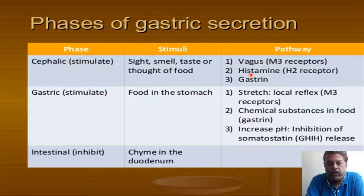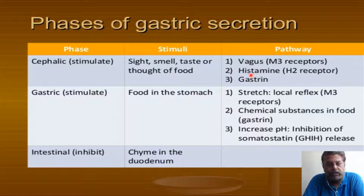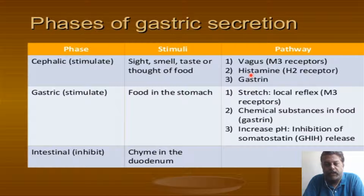Before the etiopathology, let's share some physiological aspects of gastric acid secretion. Gastric acid secretion has got three phases. The first is before the food reaches the stomach - the cephalic phase - where the stimuli are the sight, smell, taste, or thought of food. This activates the vagus, histamine, and gastrin receptors and causes an increase in gastric acid secretion.